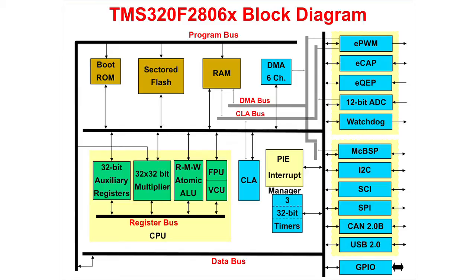In the upper left area of the block diagram you will find the memory section, which consists of the boot ROM, secured flash, and RAM. Also, you will notice that the six-channel DMA has its own set of buses.